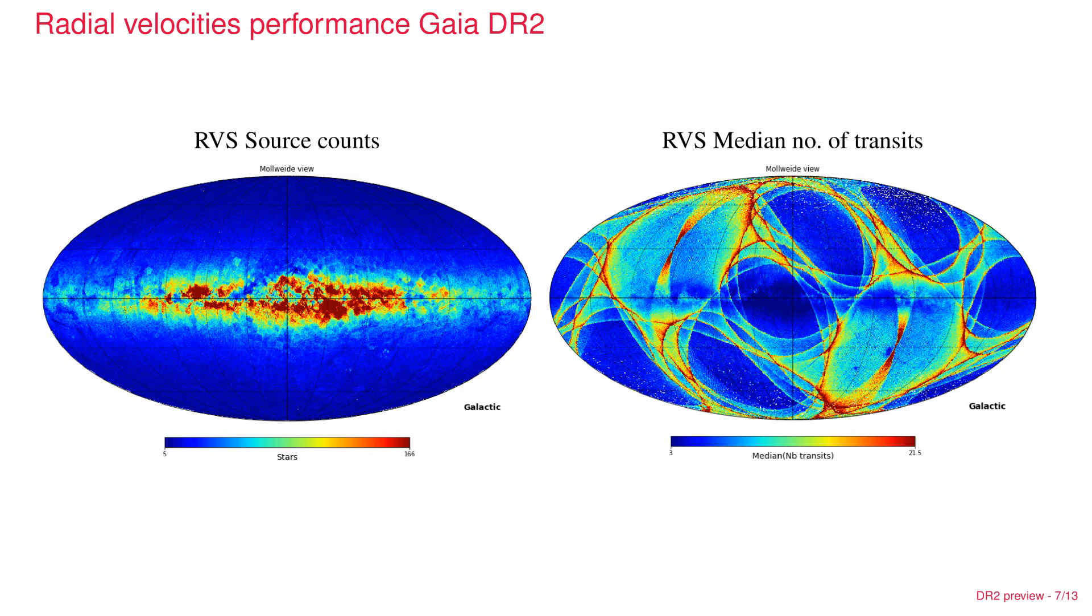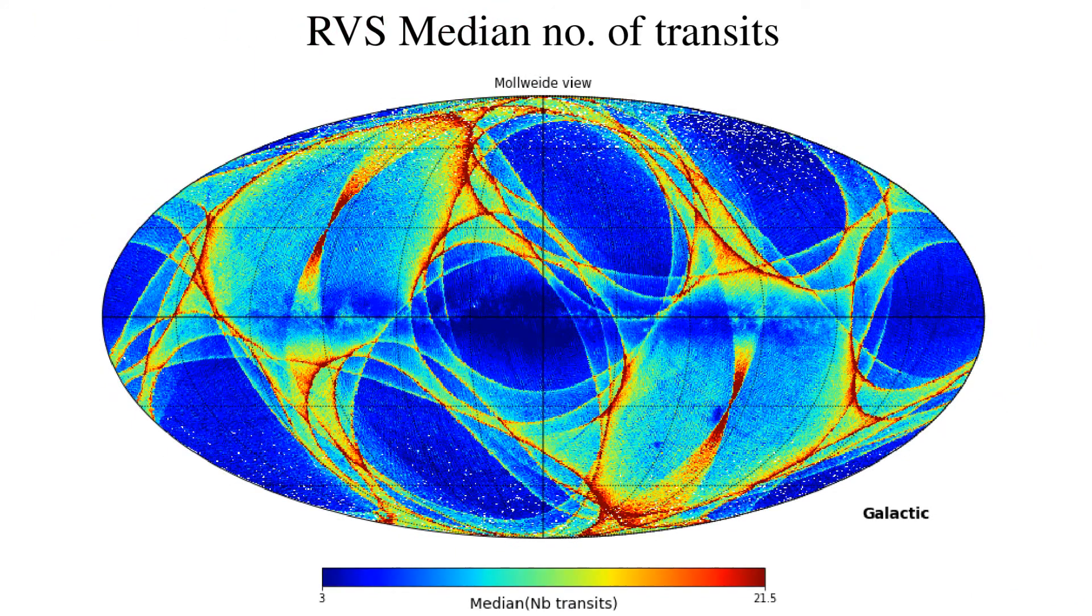On the right, you see an image of the number of times that the sky was scanned or the number of times that spectra were taken in each position of the sky, with obviously a very strong imprint of the Gaia scanning law and also an imprint of the fact that they demanded a certain minimum number of observations per star. This gives an impression of how the radial velocity precision will vary as a function of position on the sky.